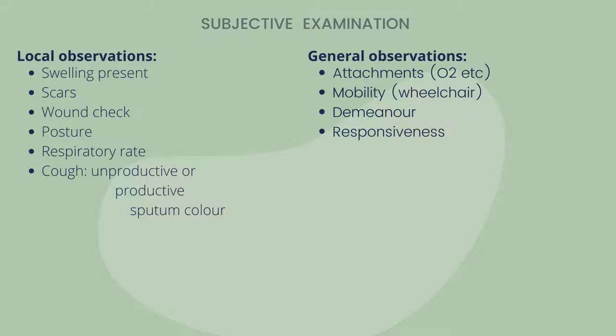You also check their posture and respiratory rate. If you'll be working on the respiratory system, go into more detail — do they have a cough, is it productive or unproductive, what color is the sputum? With observations, you focus on what you're concerned with or what part you'll be focusing on in your management. Then you have general observations: are they attached to oxygen or any monitors, are they mobile, do they have a wheelchair or crutches?